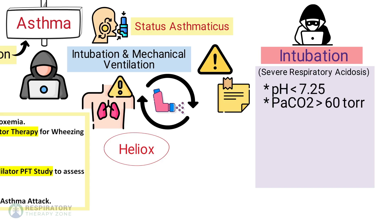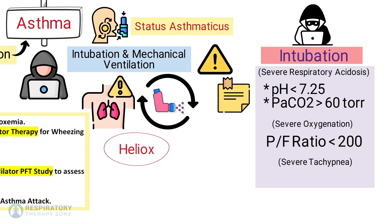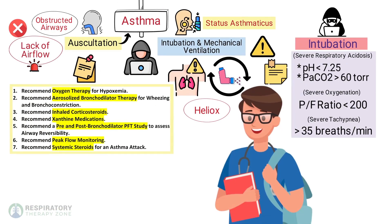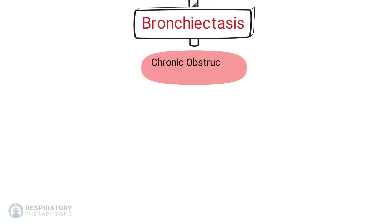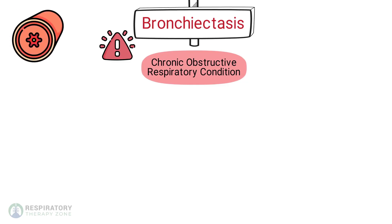You can also look for severe oxygenation failure, which occurs when the PF ratio is less than 200. You can look for severe tachypnea, which occurs when the patient has a respiratory rate greater than 35 breaths per minute.